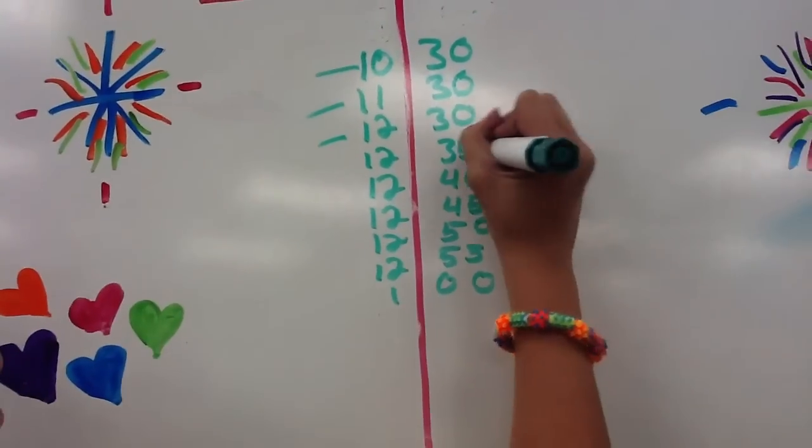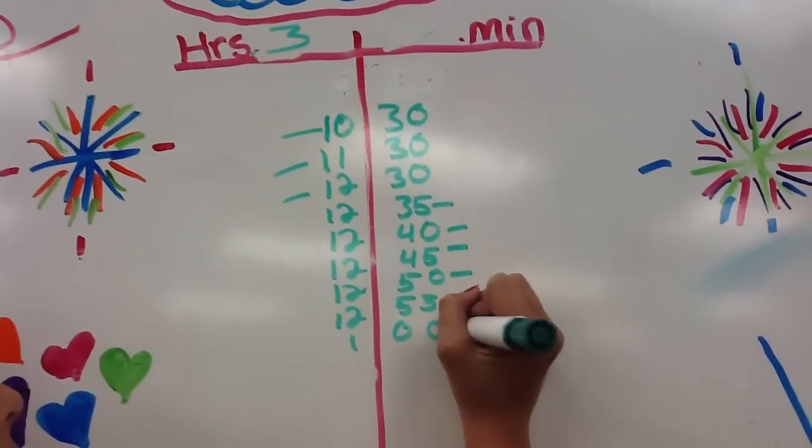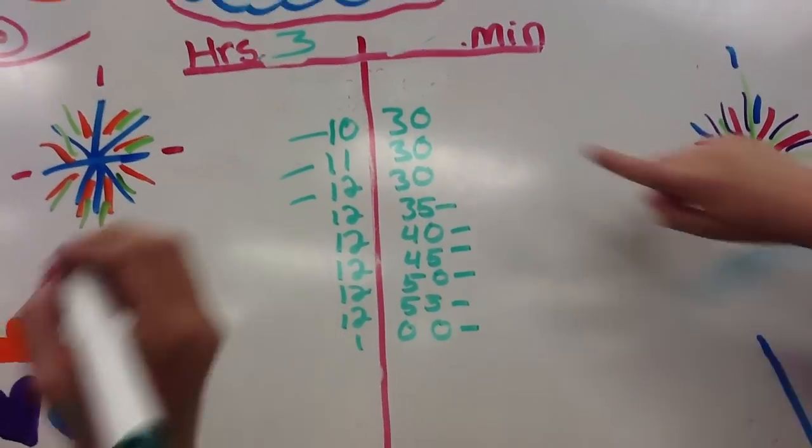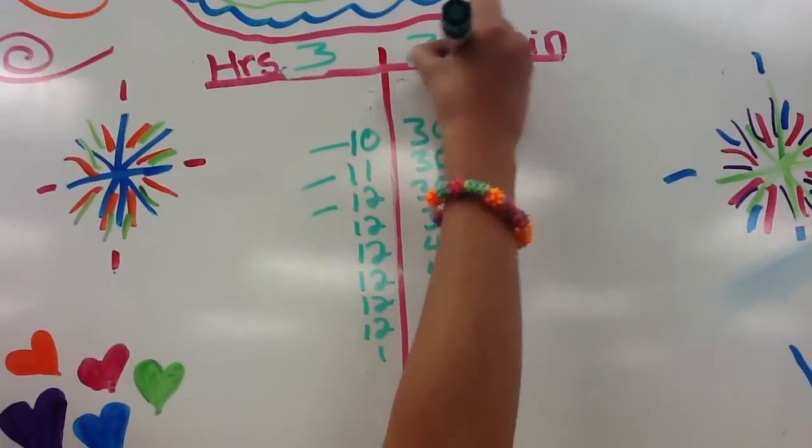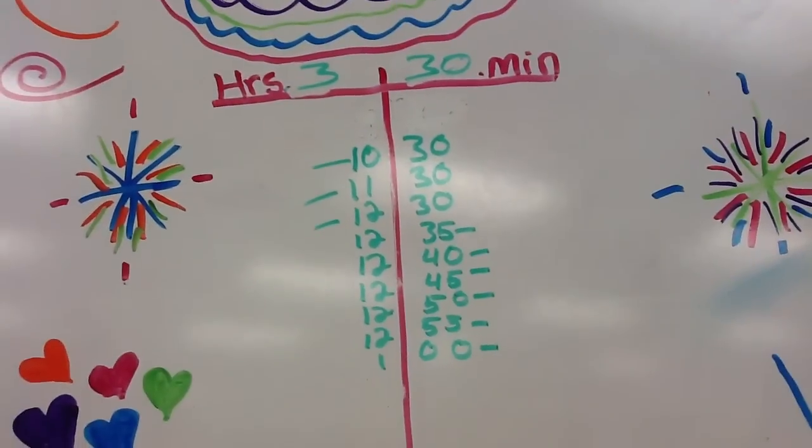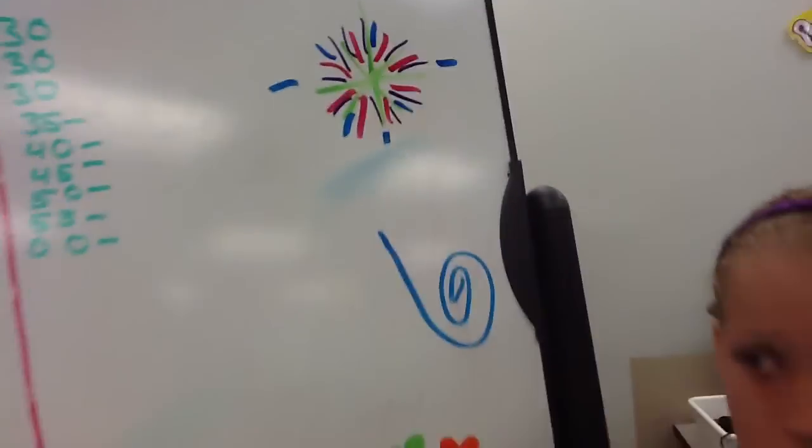And then 5, 10, 15, 20, 25, 30. And you're not counting those because those are all 30s, right? Yes. Okay, 30 minutes. So I have 3 hours and 30 minutes until lunch.